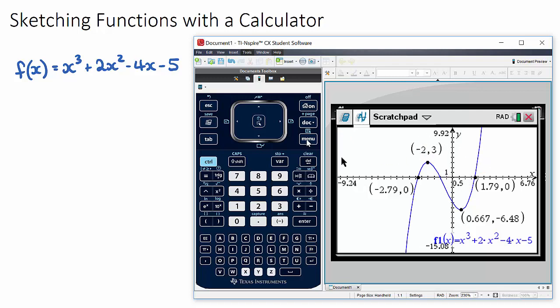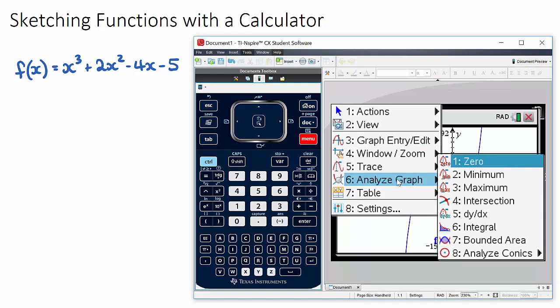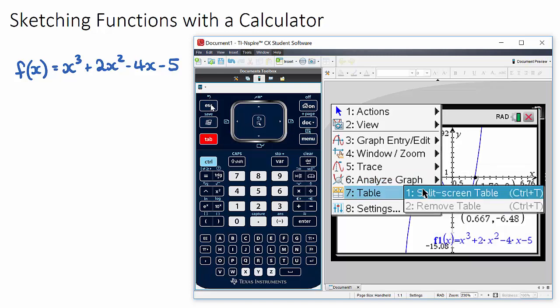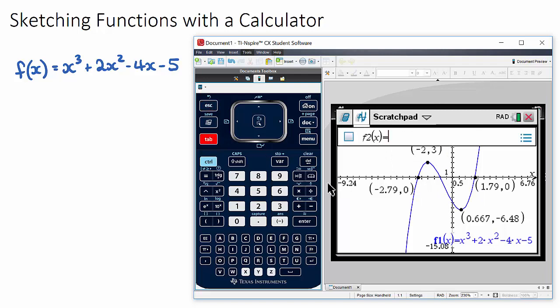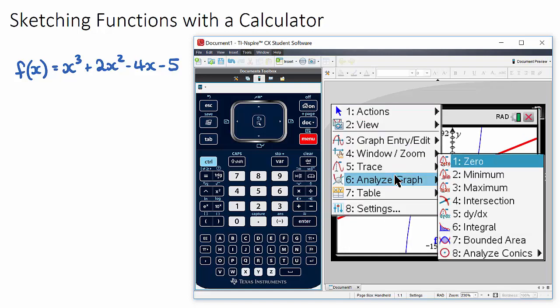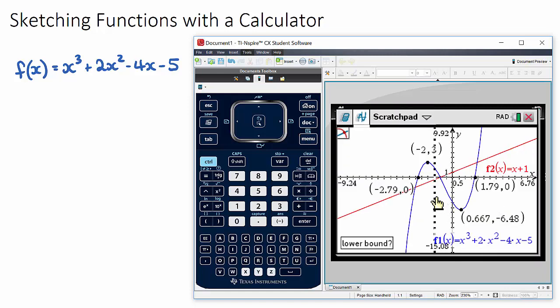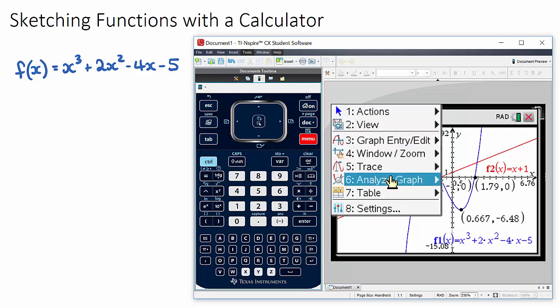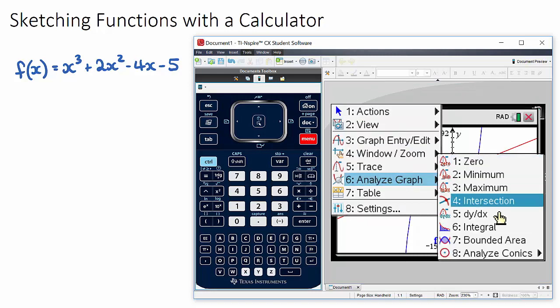If you have a look at the analyze graph, what else is here? Intersection is for intersection of two lines. If you do have another curve, which you can just do by pressing tab, and if I put in for example x plus one, I could find the intersection just by using the analyze graph intersection and choose where they're intersecting here.